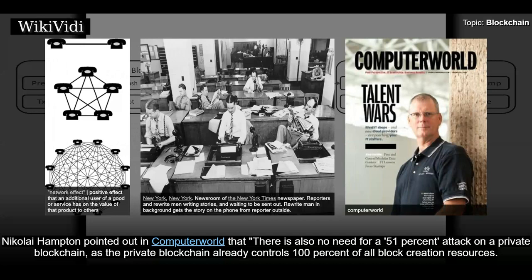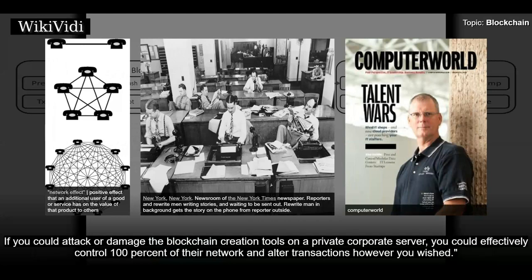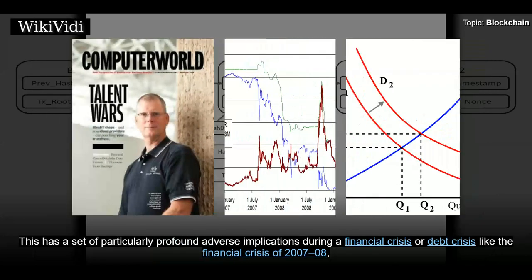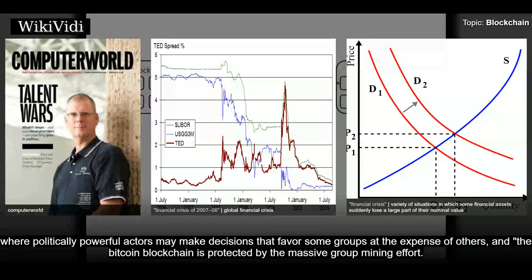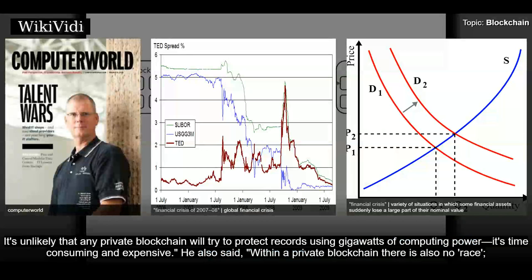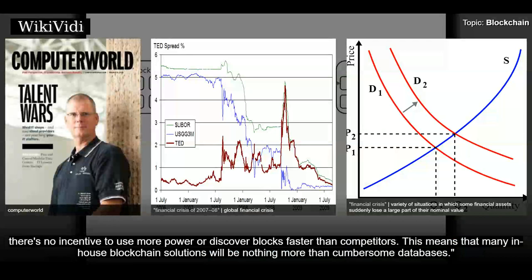Nikolai Hampton pointed out in Computerworld that there is also no need for a 51% attack on a private blockchain, as the private blockchain already controls 100% of all block creation resources. If you could attack or damage the blockchain creation tools on a private corporate server, you could effectively control 100% of their network and alter transactions however you wished. This has profound adverse implications during a financial crisis, like the financial crisis of 2007-08, where politically powerful actors may make decisions that favor some groups at the expense of others. The Bitcoin blockchain is protected by the massive group mining effort; it's unlikely that any private blockchain will try to protect records using gigawatts of computing power, as it's time consuming and expensive. Within a private blockchain there is also no race, no incentive to use more power or discover blocks faster than competitors, meaning many in-house blockchain solutions will be nothing more than cumbersome databases.